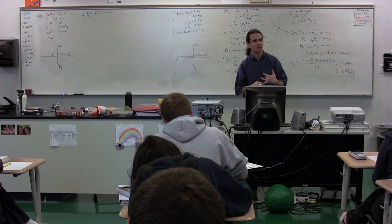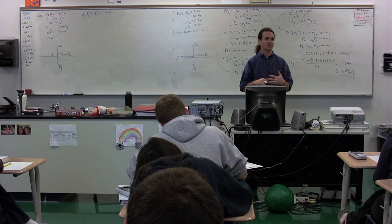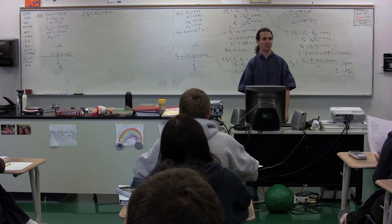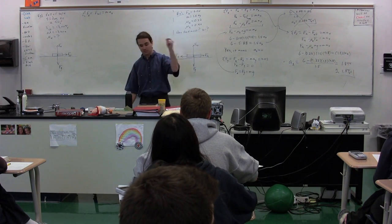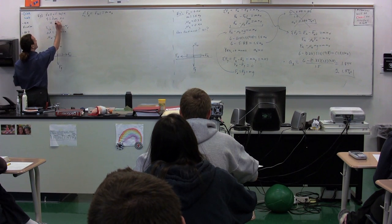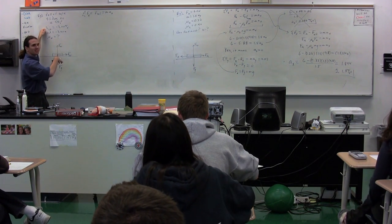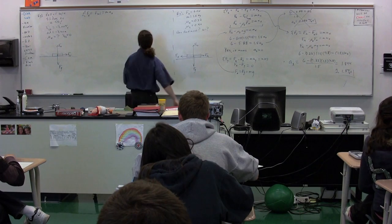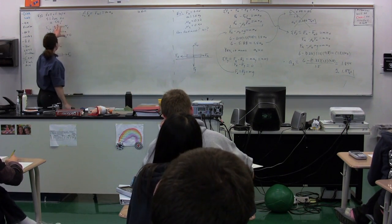Do we know the force of kinetic friction? No. Do we know the mass? No. Do we know the acceleration? No. We don't know any of those three. Somebody give me a strategy. We could find the acceleration using initial velocity, delta x, and final velocity. The final velocity is zero because it comes to a stop. So we can take a brief detour and use UAM. We know the acceleration is going to be constant because the force is going to be constant.